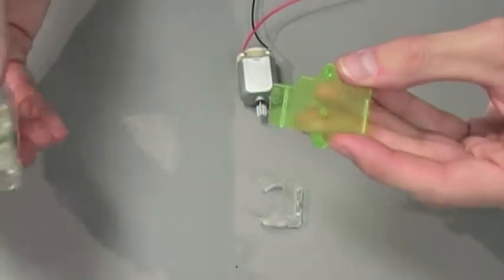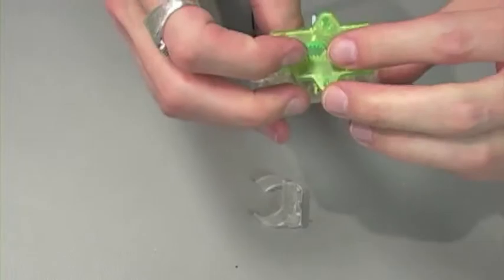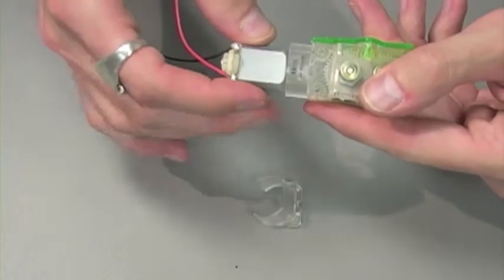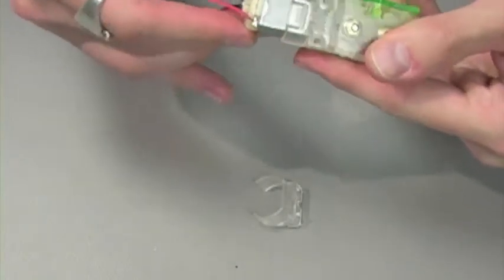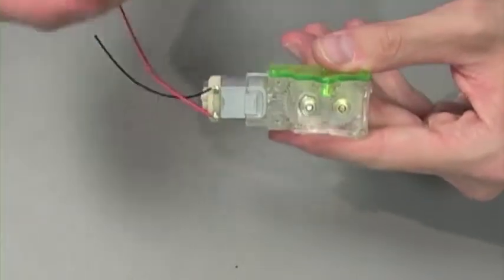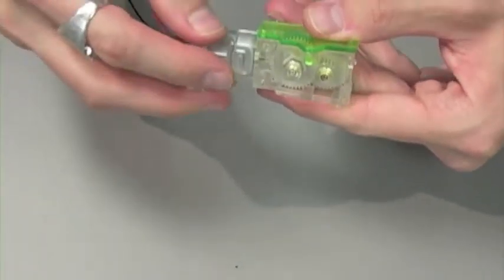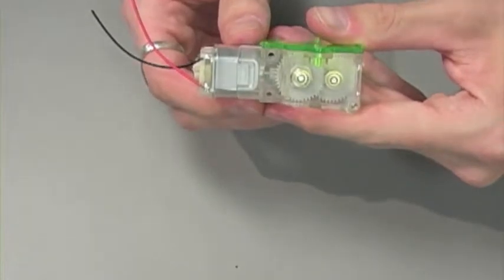Next, let's take part B2 and attach it to our gearbox. Now let's take our motor and making sure that the wires are facing away from the gearbox, snap it into position, and then using part M5, we're just going to cover up those wires for a little protection.